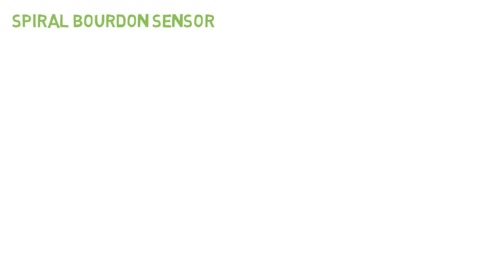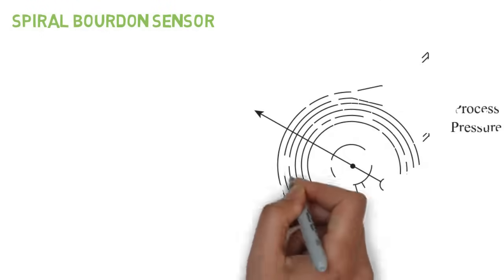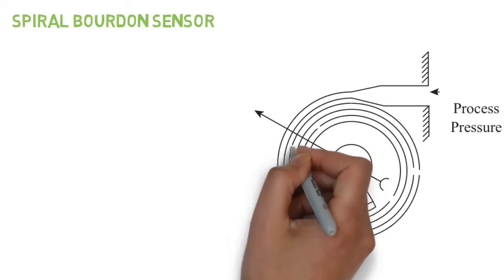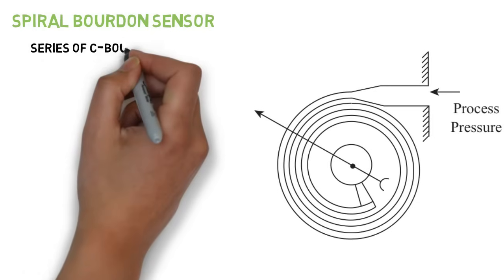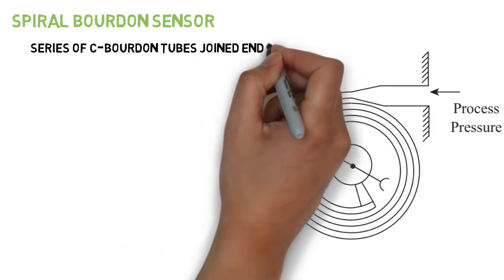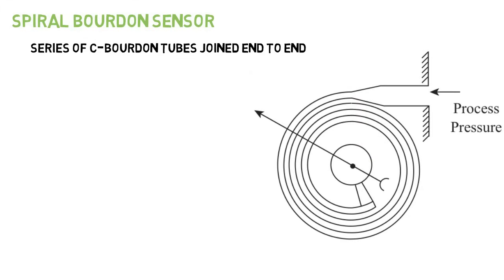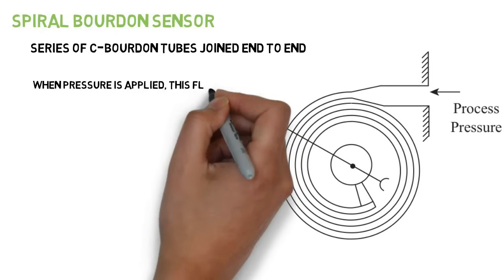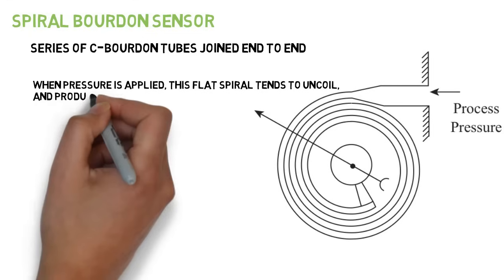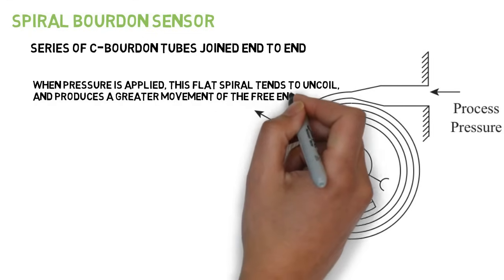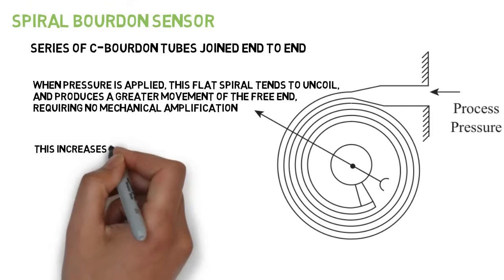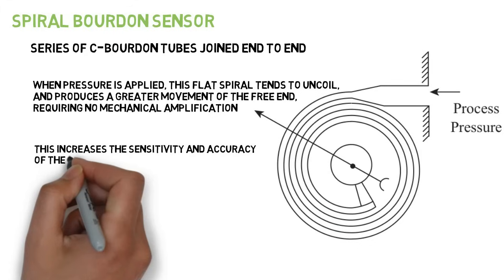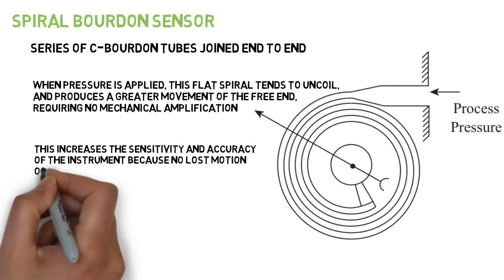Since the free end motion of the C type Bourdon tube is insufficient in some cases, the spiral type Bourdon tube is used. The spiral element is essentially a series of C type Bourdon tubes joined end to end. When pressure is applied, this flat spiral tends to uncoil and produces a greater movement of the free end, requiring no mechanical amplification. This increases the sensitivity and accuracy of the instrument, because no lost motion or friction is introduced through the links and levers.